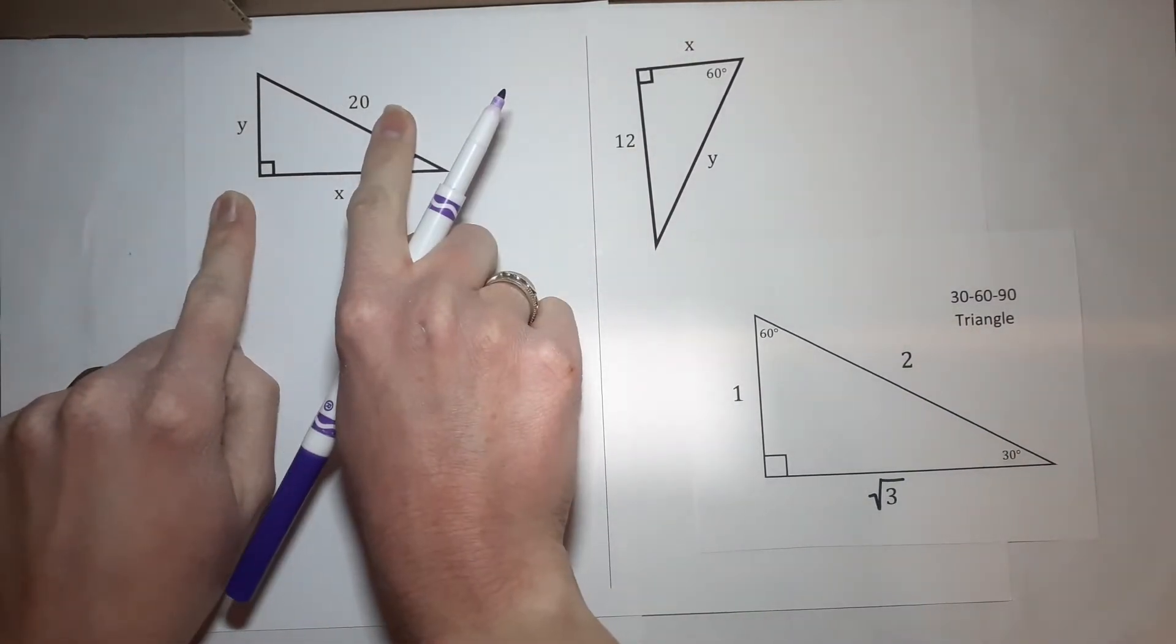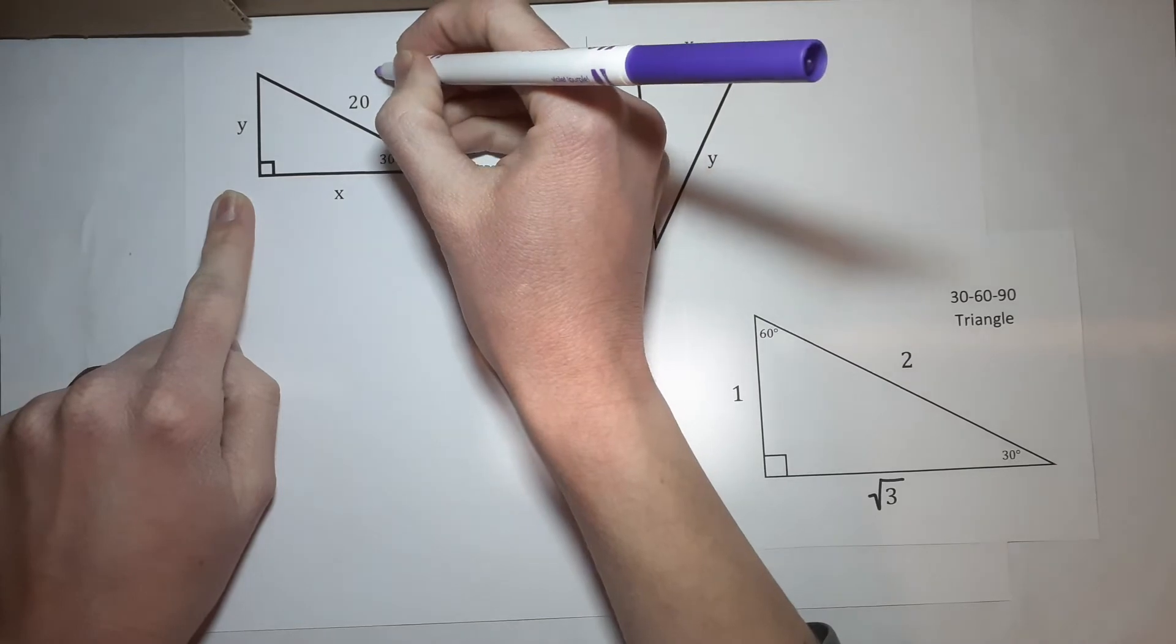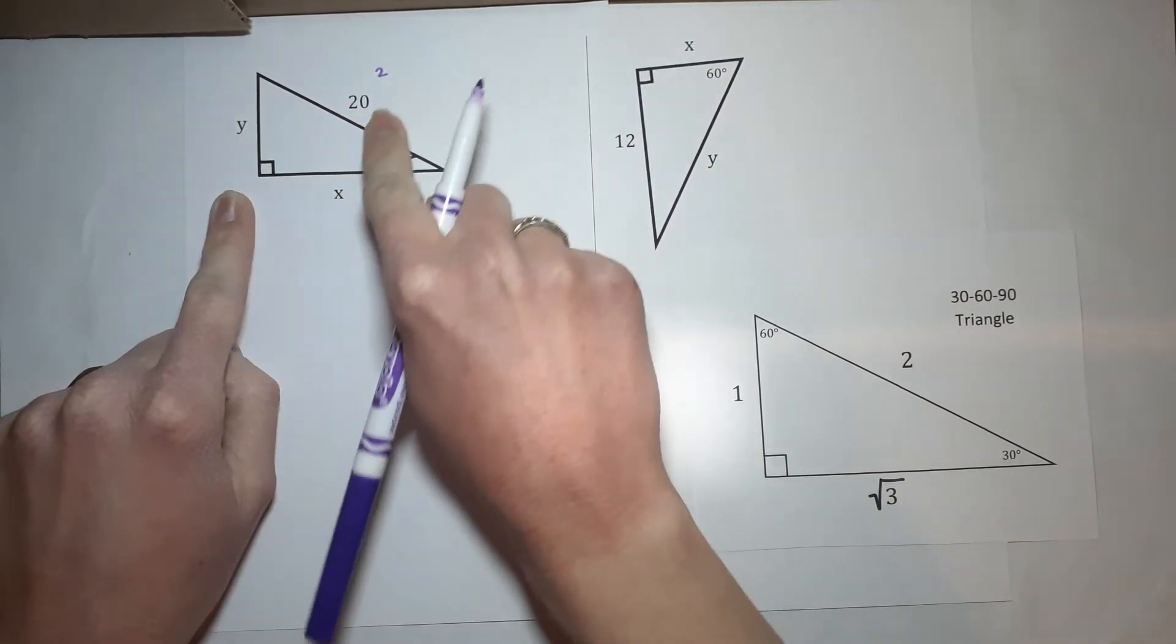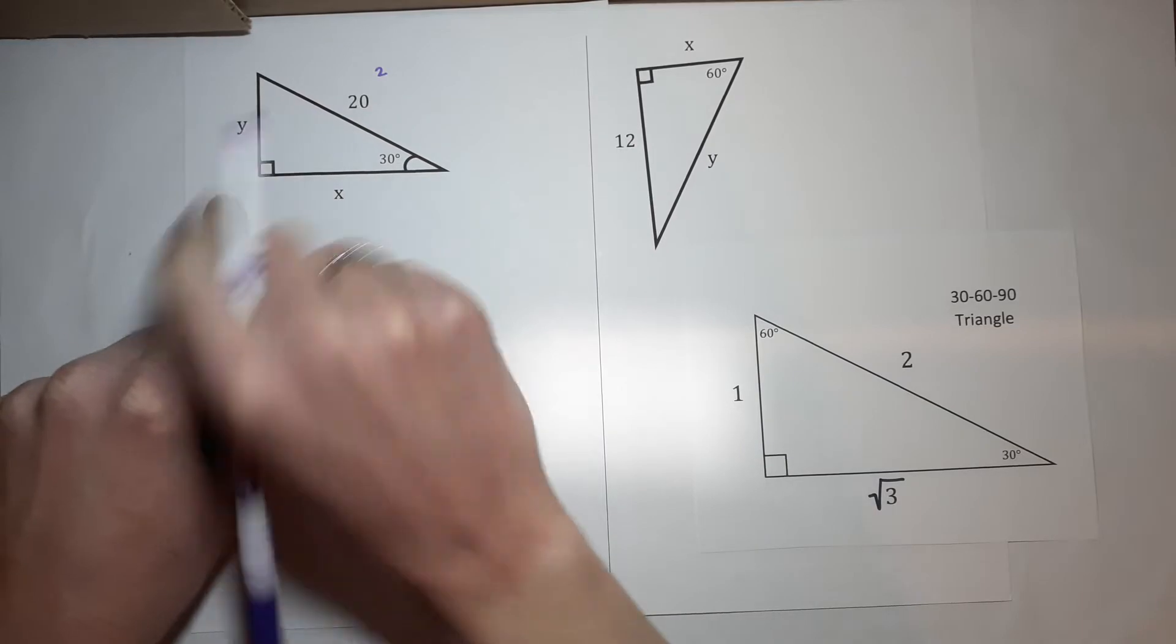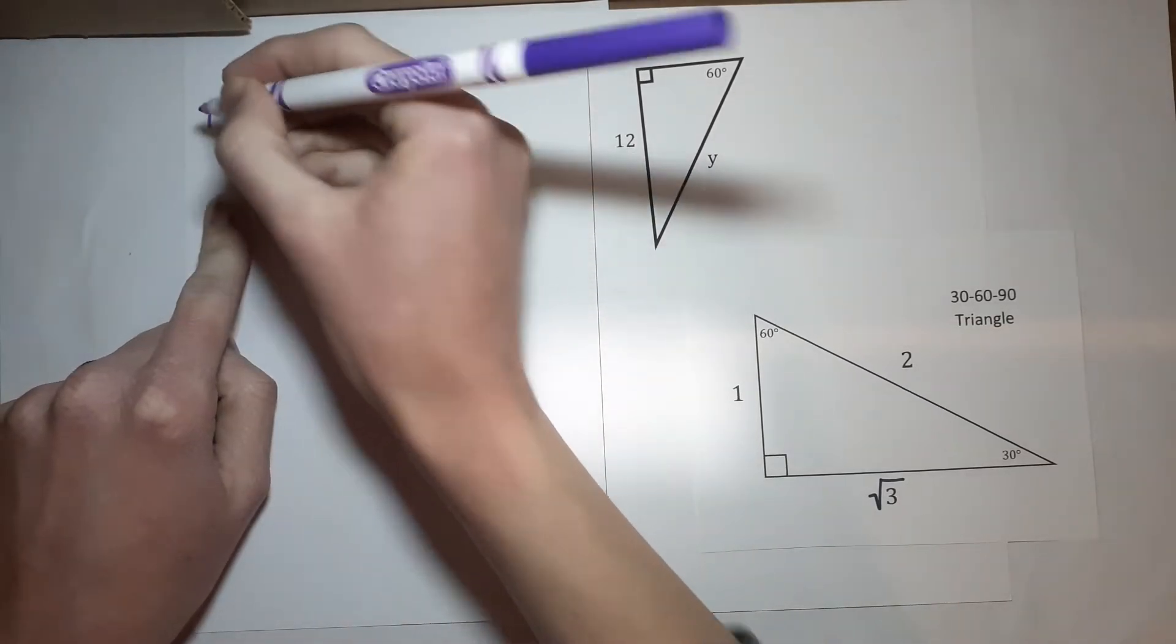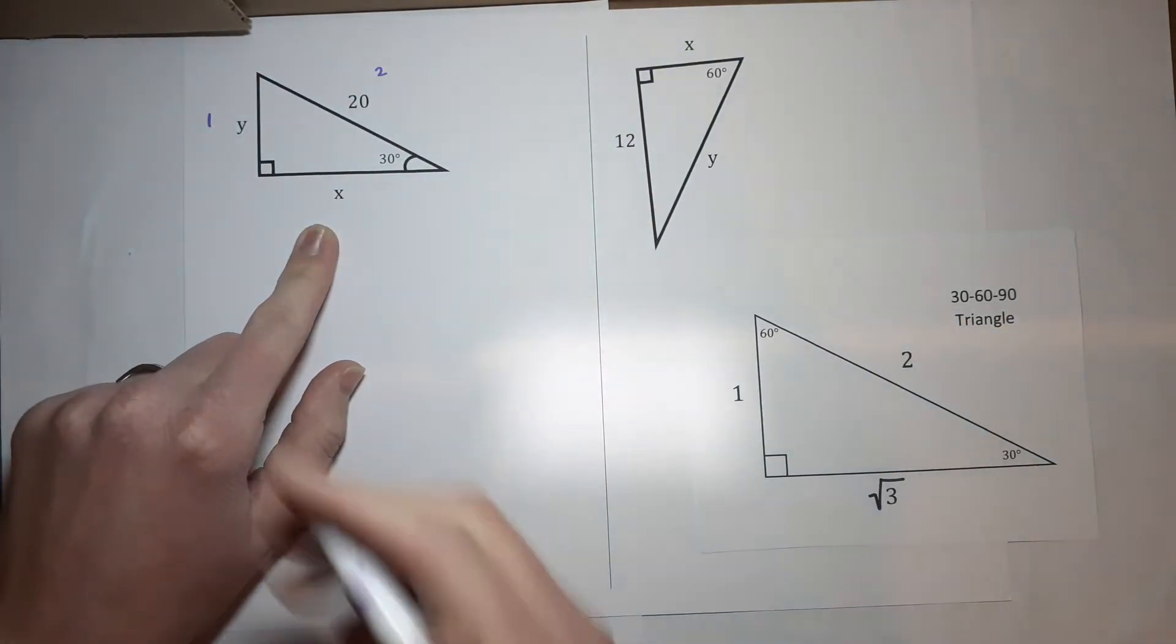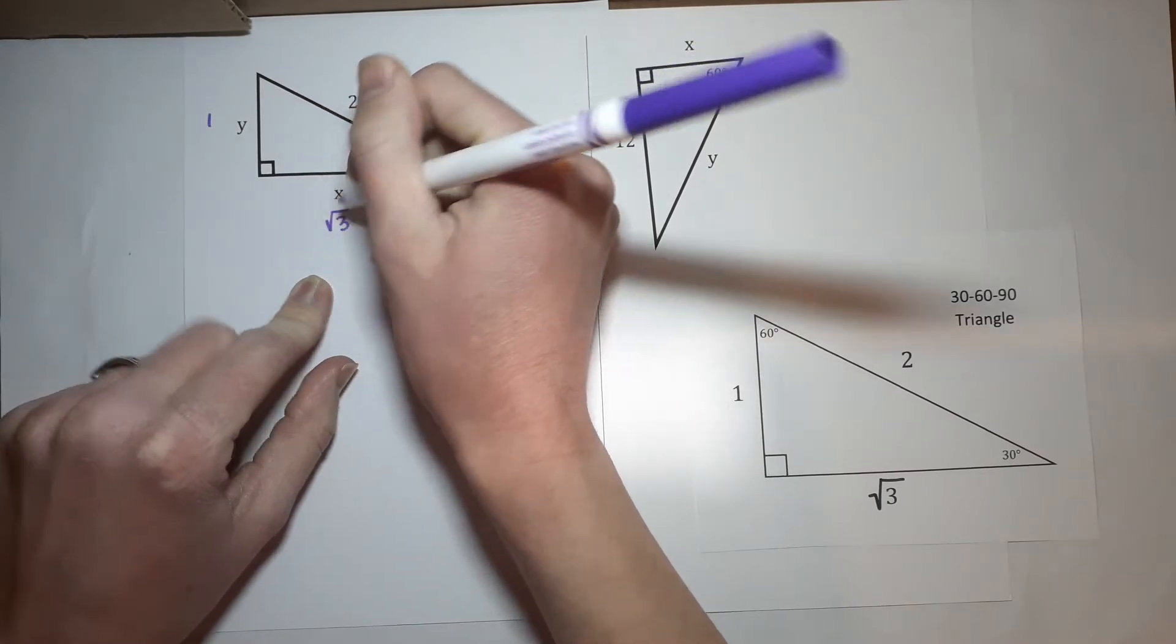My hypotenuse is 2 here. So, this number is somehow related to 2. My 1 across from the 30 is 1. And the 1 across from the 60 is the square root of 3.